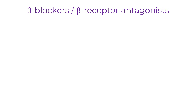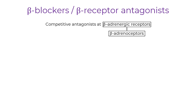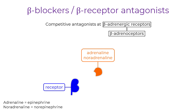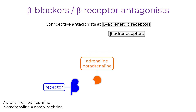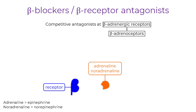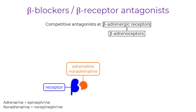Beta blockers, also known as beta receptor antagonists, act as competitive inhibitors at beta adrenergic receptors. These receptors, often called beta adrenoceptors, respond to agonists like adrenaline and noradrenaline, also known as epinephrine and norepinephrine. When an agonist molecule binds to the receptor, it activates it briefly before unbinding. This binding and unbinding can happen repeatedly, with each interaction triggering receptor activation.